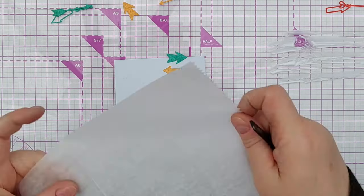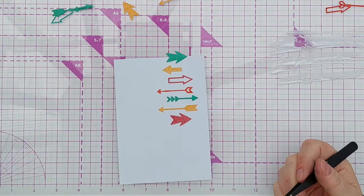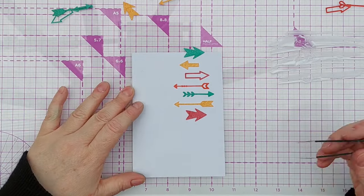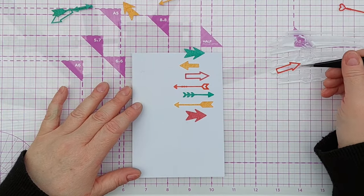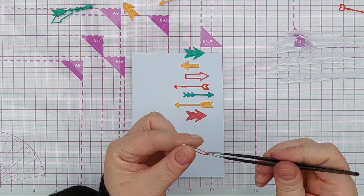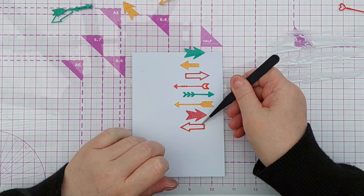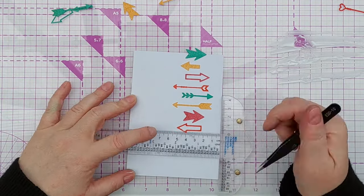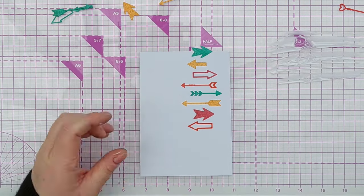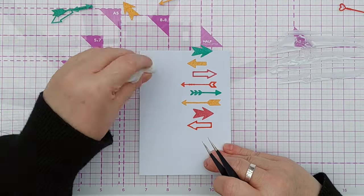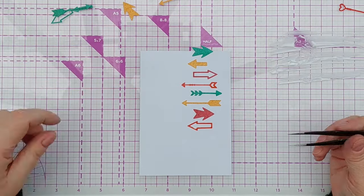If you wanted to add lots of dimension to your card you could pop some of the more solid arrows up on foam tape or before cutting your arrows you could put double-sided adhesive craft foam on the back of your colored pieces of card and then cut your arrow shapes out and then they would be quite dimensional. I think that would look really nice.